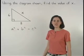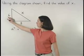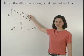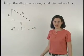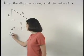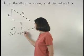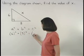So here, since our legs have lengths of 6 and 8 and our hypotenuse has a length of x, we can set up the equation 6 squared plus 8 squared equals x squared.